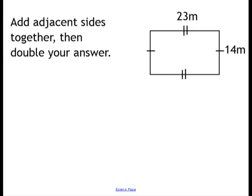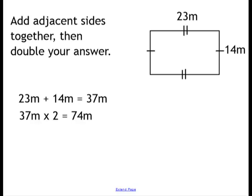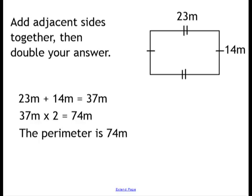So here's another shape with that notation. I've got two sides that are 14m and two sides that are 23m. So I add together adjacent sides and double my answer. 23 add 14 is 37, double 37 is 74, so the perimeter of this shape is 74m.